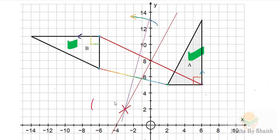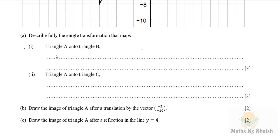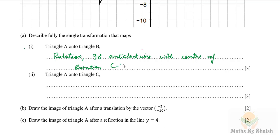From the graph, the center of rotation is at (−3, 2). So the full description is: rotation, 90° anti-clockwise, with center of rotation (−3, 2). This earns one mark for naming rotation, one for 90° anti-clockwise, and one for the correct center.